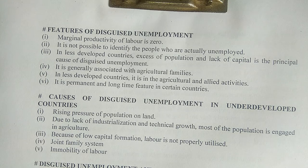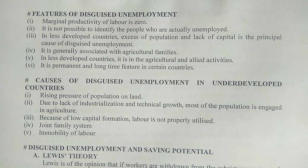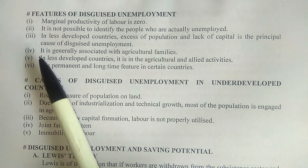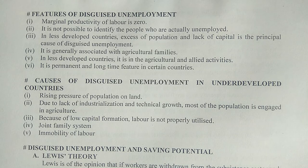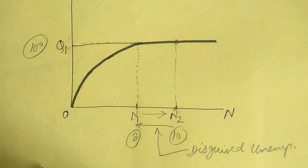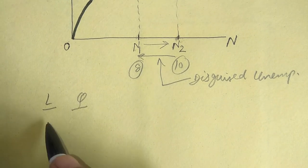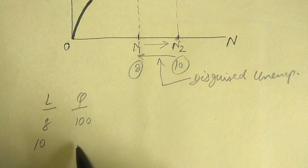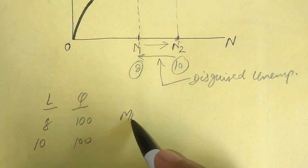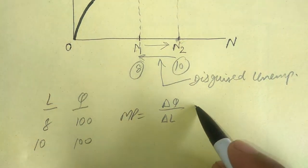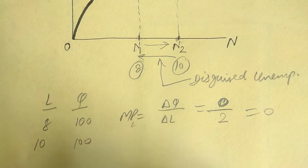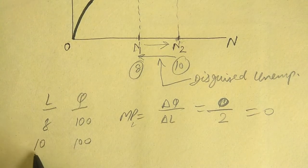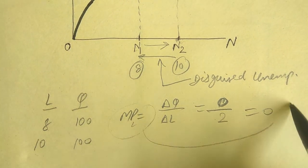Features of disguised unemployment: First, the marginal productivity of labor is zero. With 8 labor producing 100 output and 10 labor also producing 100 output, the marginal product is the change in Q divided by change in L, which is (100 - 100) / 2 = 0. The marginal productivity of the additional 2 workers is zero — their contribution is nil.